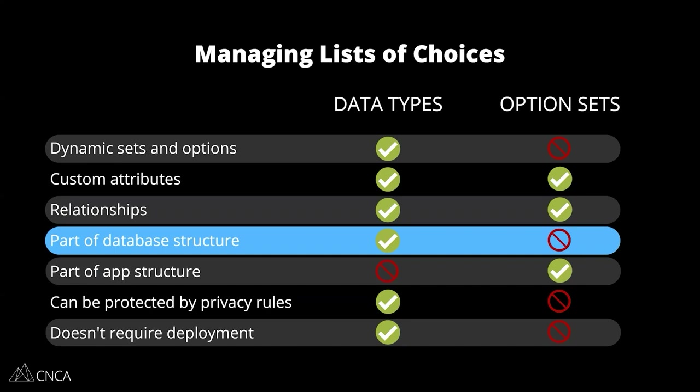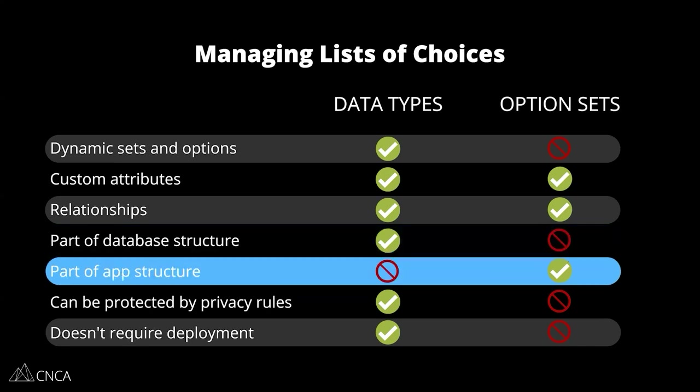Data types are a part of your database structure — they create the tables. Option sets are not a part of the database structure. You don't search through your option sets; you access them differently. Bubble actually bakes them into your editor in a different way. It's a separate dynamic source that you can retrieve whenever you're designing your front-end pages or creating workflows. Option sets are a part of your app structure.